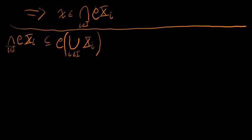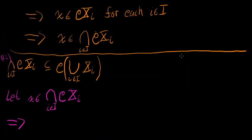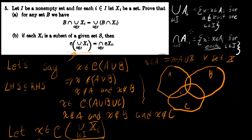Let me change colors to show we're doing the second part of the proof. Let x be in the intersection over i in I of the complement of Xᵢ for all i in I. Then by the definition we talked about earlier, x is in every Aᵢ — that is, x is in the complement of Xᵢ for each and every i in I.